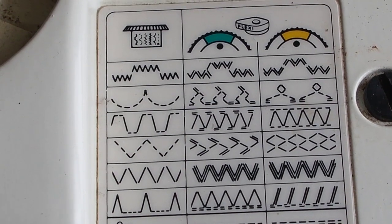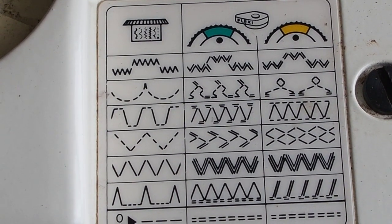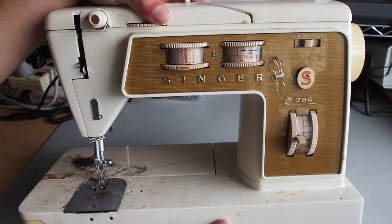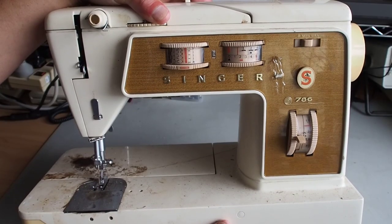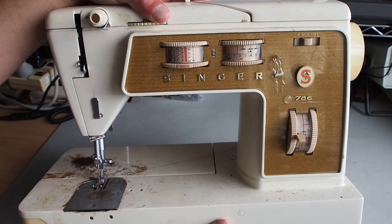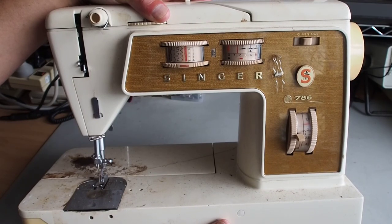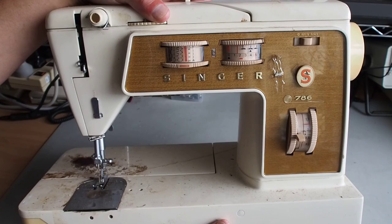Still got the badge on it, this one. If we have a look under the lid here - pattern stitches there and some of the stretch stitches. There's quite a few more than the 766 model, so a very similar model to the 766 really, with a few more stretch type stitches. I think that's the only difference there that I can see anyway.